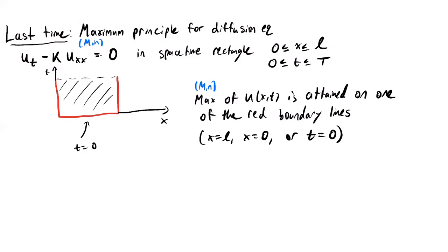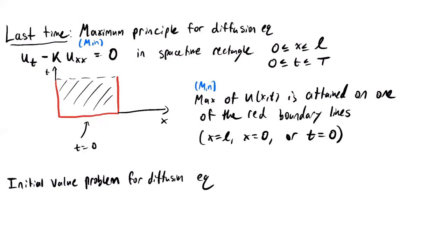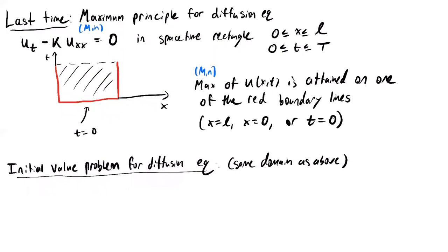What we're going to do now is look at an application of the maximum principle, which turns out to be very important to studying the initial value problem in these sorts of domains. Let's look at a particular type of initial value problem. We're going to consider the same domain as above — a finite spacetime rectangle where x is in a certain interval and time is in a certain interval.